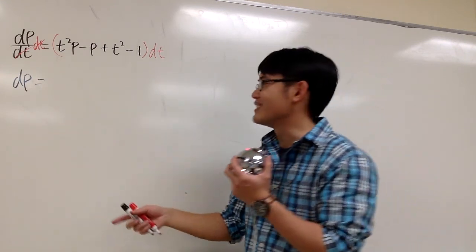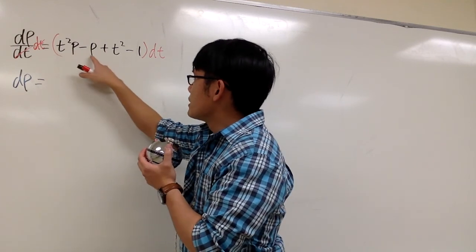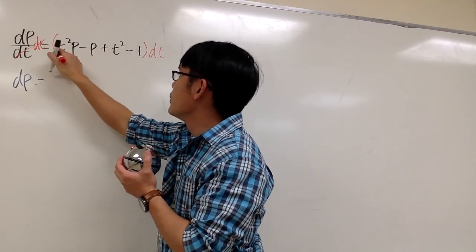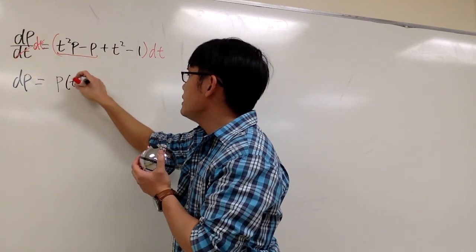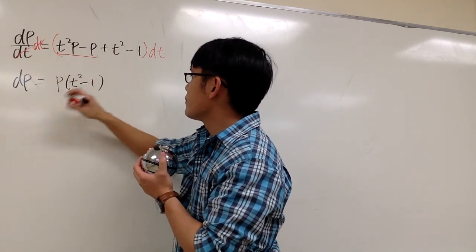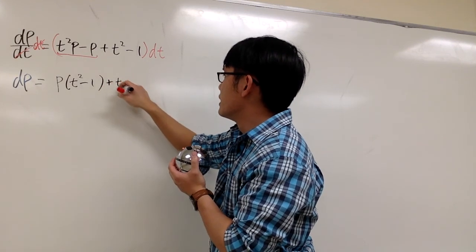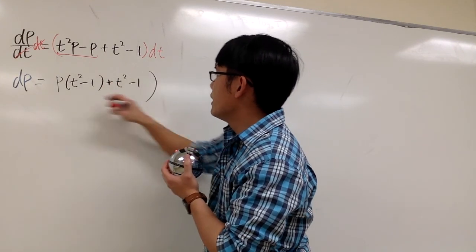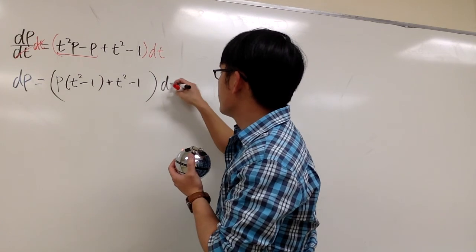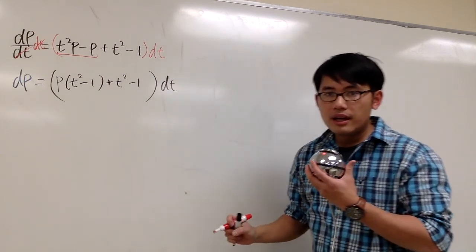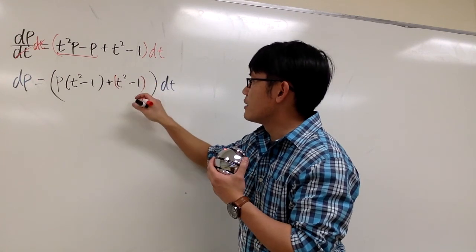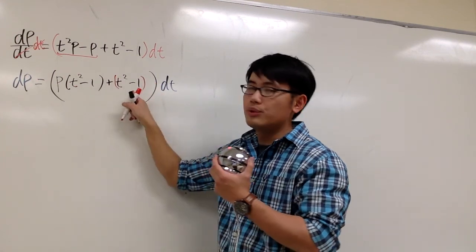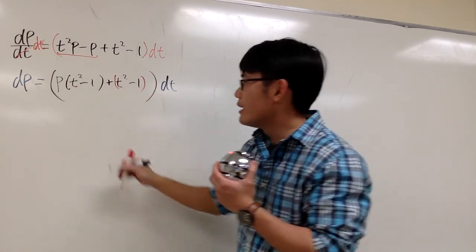With that being said, let's factor this out. First, both of these terms have p, so we can look at these two terms and then factor out the p, and then we have t squared minus 1, and then let's put on the rest, plus t squared minus 1. All this is still multiplying with dt. And as you can see, this is technically like a factor, and then we are lucky because these two are exactly the same.